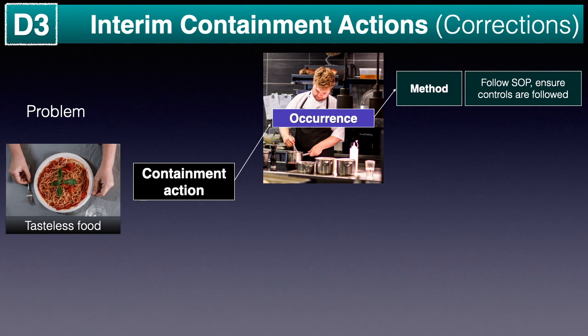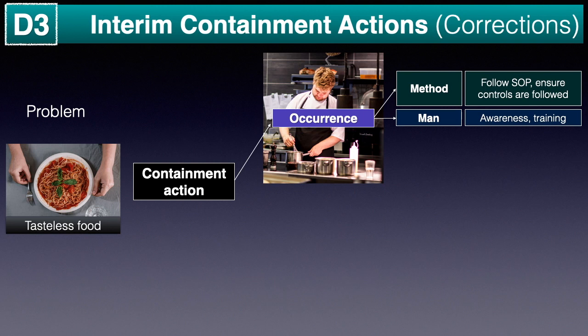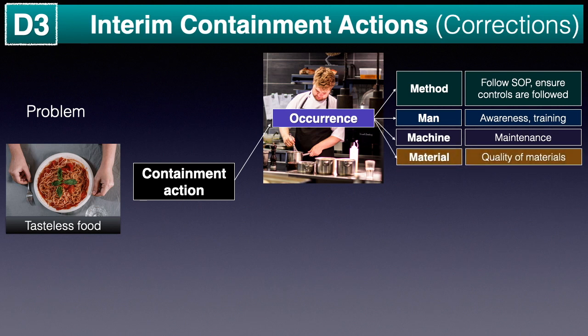In case feasible and being essential considering the severity of the problem, other areas such as Man — to improve awareness regarding the problem or complaint and procedures to be followed, and providing training to improve competence. Machine — by doing necessary maintenance of machines which would have caused the problem. Material — ensuring the quality of materials used.